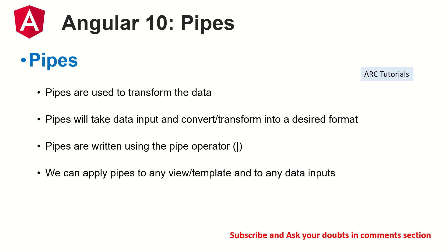You pass some data as input and tell the system what it needs to do — for example, transform it, massage it, extract some data out of it, and show it in the desired format. The desired format always goes into the template, so this is all done on the template side.